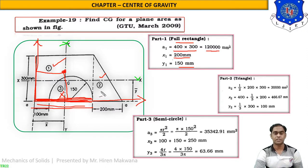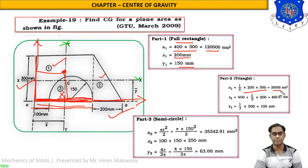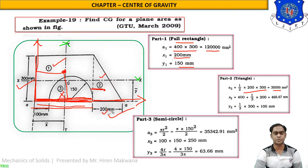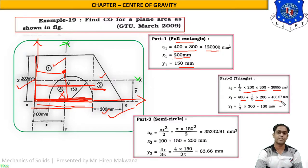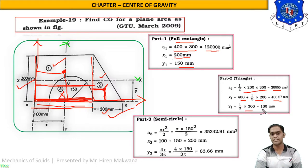For part two, the triangle: area = (1/2) × base × height = (1/2) × 200 × 300 = 30,000 mm². The CG from the base is b/3 = 200/3, but adding the 400 mm offset to the y-axis gives x2 = 400 + 200/3 = 466.67 mm. y2 = h/3 = 300/3 = 100 mm.